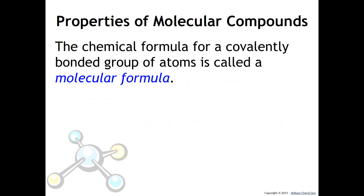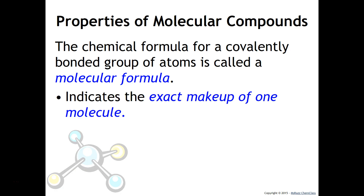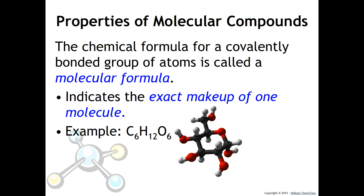The chemical formula for a covalently bonded group of atoms is called a molecular formula. The molecular formula indicates the exact makeup of one molecule. For example, glucose is C₆H₁₂O₆ — notice it is not arranged in the lowest whole number ratio, because this indicates the makeup of a molecule. If you change the formula for any molecular compound you've changed it into a completely different substance, so you must never reduce the ratio of atoms in a covalent compound.